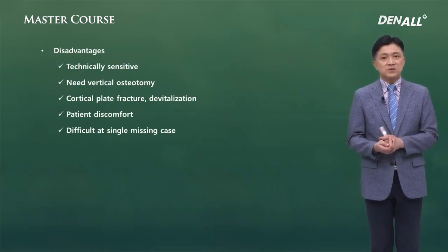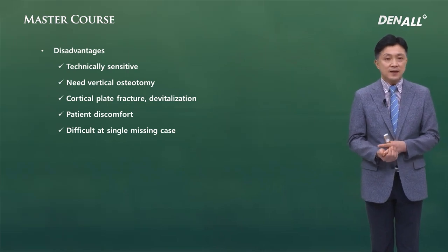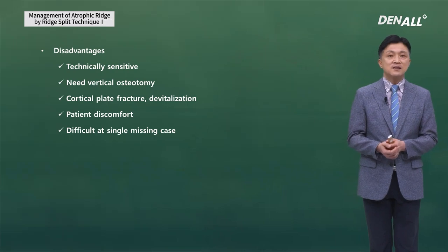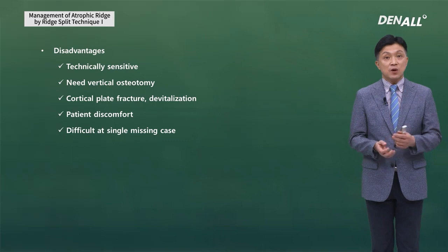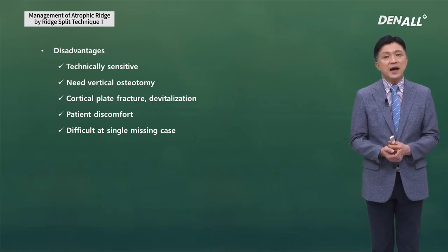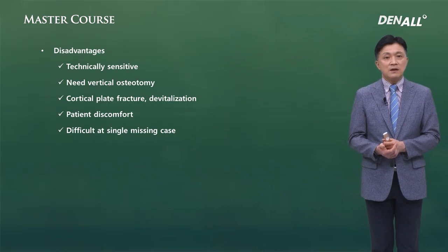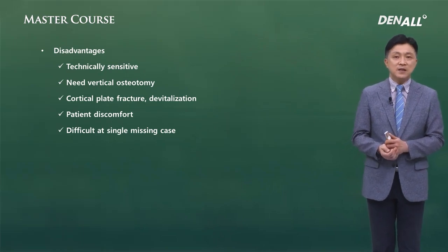If osteotomy is done wrongly, there can be fracture, and it requires vertical osteotomy. If done wrong it can lead to cortical plate fracture and devitalization. Because the surgical site widens and additional incisions are made on the bone, the patient feels a lot of discomfort. This technique can be very difficult in single missing cases.